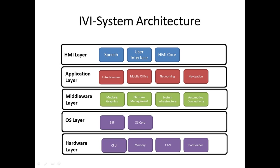The bottommost layer is the hardware layer. It is composed of a processor with additional essential hardware and firmware to boot the operating system. Additionally, this layer is often equipped with a set of automotive input/output devices like CAN and MOST interfaces.